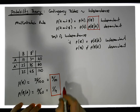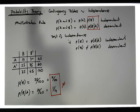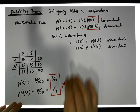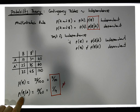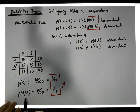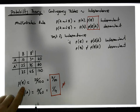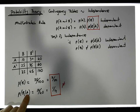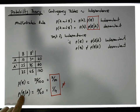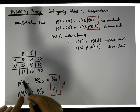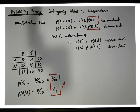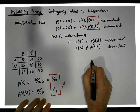These two probabilities are not equal to each other, so in this scenario we have dependence between A and B. When we selected B knowing that A has happened, the probability changed. Not knowing any extra information, the probability of B is 7 out of 20. But knowing something about A changed the probability of B. So B is dependent on whether we're given information about A or not.